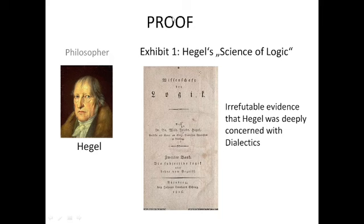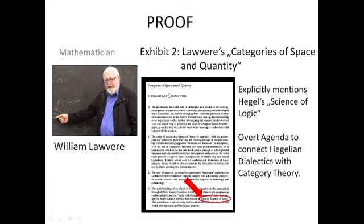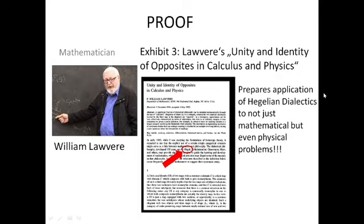This is exhibit two, Lawvere's paper, Categories of Space and Quantity, where Lawvere is talking a lot about category theory, but for some reason Hegel's Science of Logic appears in here. You see this red arrow right here, it's pointing right to the spot on the first page of this paper from Lawvere, where Hegel is mentioned. Hegel is explicitly mentioned, and this paper, if you just read through it, you can see that this has an obvious agenda to connect mathematics and philosophy together, and William Lawvere asserts that category theory can be very useful for philosophers to render their arguments mathematically precise. That's just a very obvious agenda to connect Hegelian dialectics with category theory.